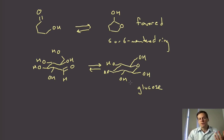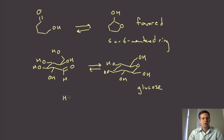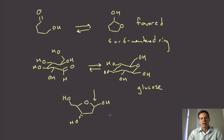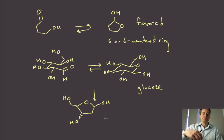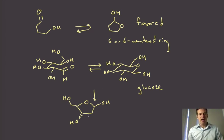Essentially all sugars involve acetal or hemiacetal formation. In the case of glucose, you form a very stable six-membered ring. All the sugars you learn about in biochemistry or biology have this hemiacetal situation going on. Another example is deoxyribose — the sugar backbone of DNA. You can see the hemiacetal linkage right there; if you opened it up, that would be an aldehyde, and there's the alcohol that would add to it. The sugar backbone of DNA basically has this hemiacetal linkage.